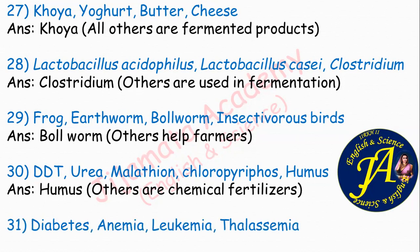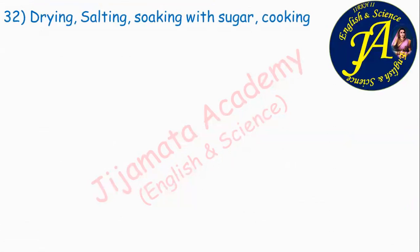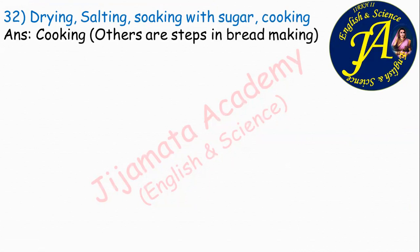Diabetes, anemia, leukemia, thalassemia. The correct answer is diabetes, because anemia, leukemia, and thalassemia are blood cell-related diseases while diabetes is related to the production of insulin. Drying, salting, soaking with sugar, cooking. The correct answer is cooking, because all others are steps in food preservation or bread making. This question was asked in the last board exam, March 2020.